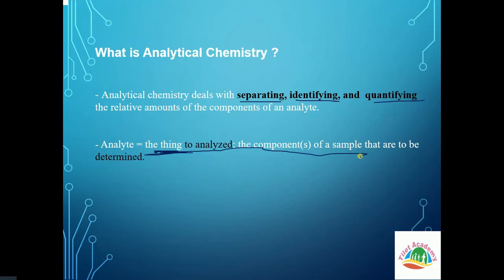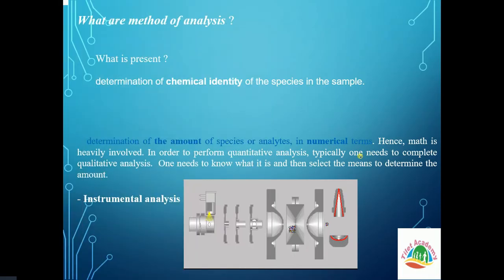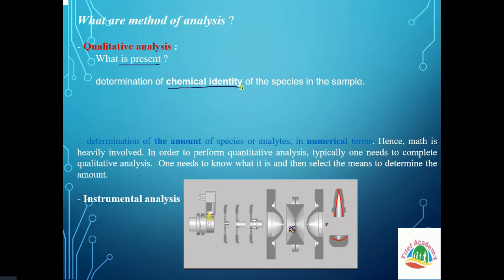For example, a sample in the laboratory of 3 grams — if you have 3 grams, you can analyze it. What is present? Chemical identity. It is called magnesium, sulfur, iron, zinc, lead — and quality. The quality parameter is called the chemical identity, for example iron. This is qualitative analysis.